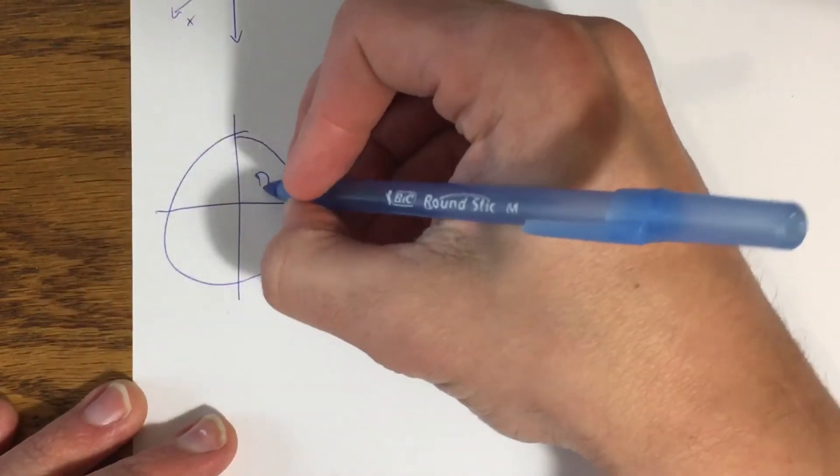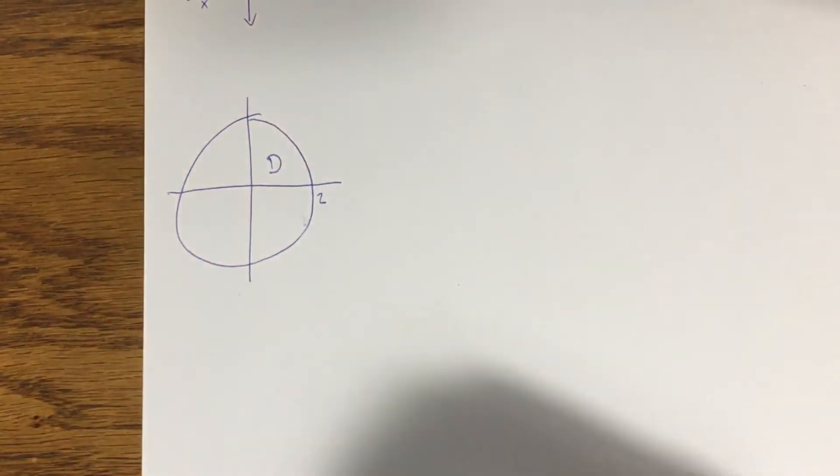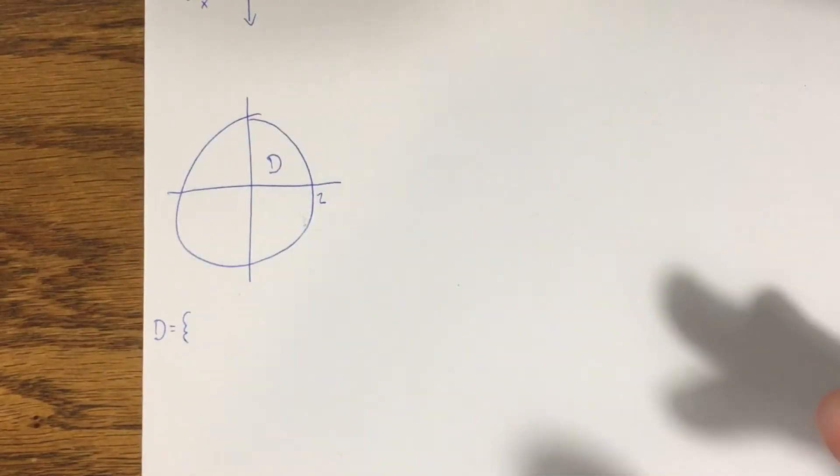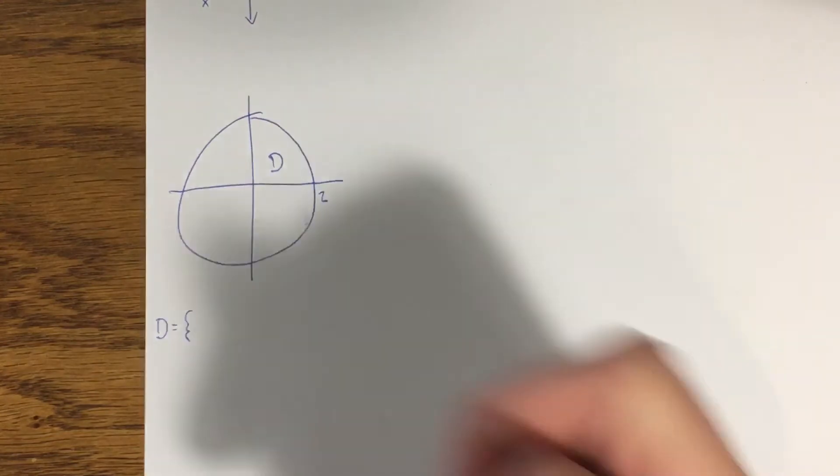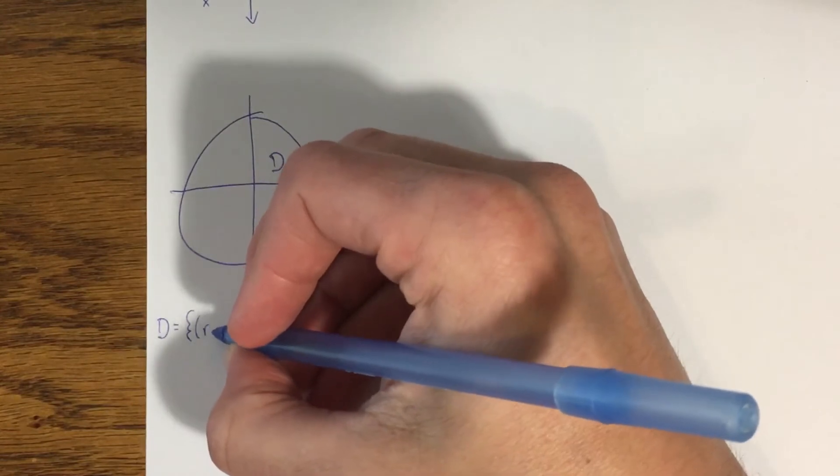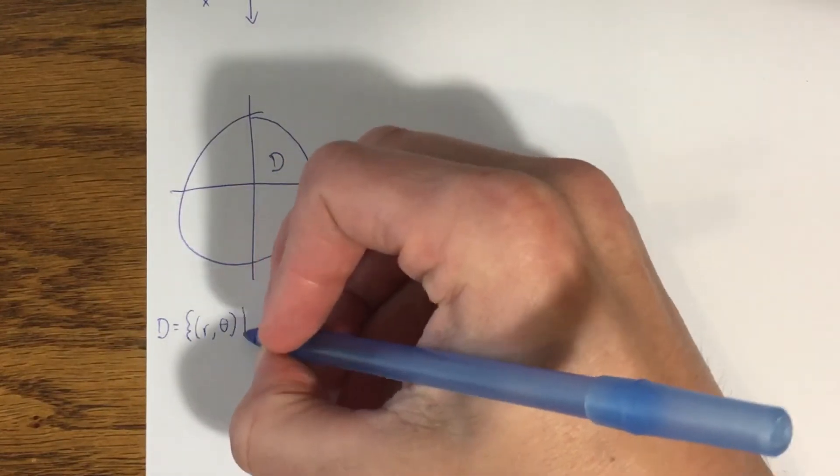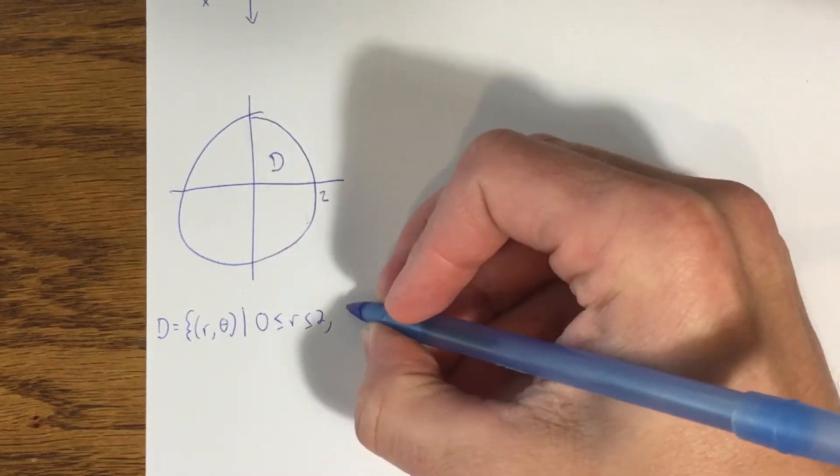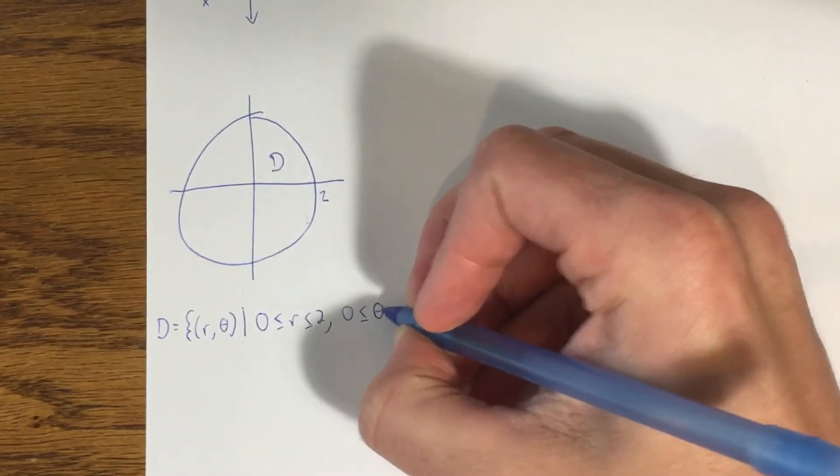Let's call that circular region D and find a description for D. Now remember, we're looking for cylindrical coordinates, so I'm going to go ahead and describe D as a set of points in polar coordinates. R is between 0 and 2. Theta is between 0 and 2π for this one.